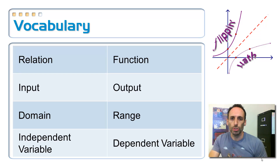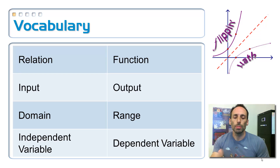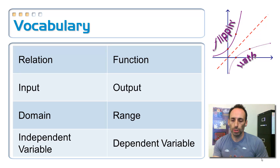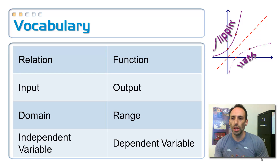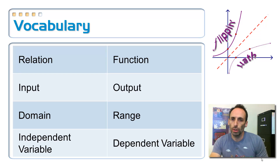Here are some terms you may have seen before in Algebra 1, maybe even geometry or science class — relation and function. Function is a very important concept in all of mathematics; so much of high school math is based around it. You have your inputs and outputs, domain and range, and independent and dependent variables — all referring to what you put in and what comes out.